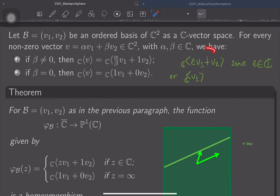Just as the one-dimensional vector subspace spanned by a complex number times the first member of the basis plus the second member of the basis, with a one here, or simply the vector subspace spanned by the first vector.